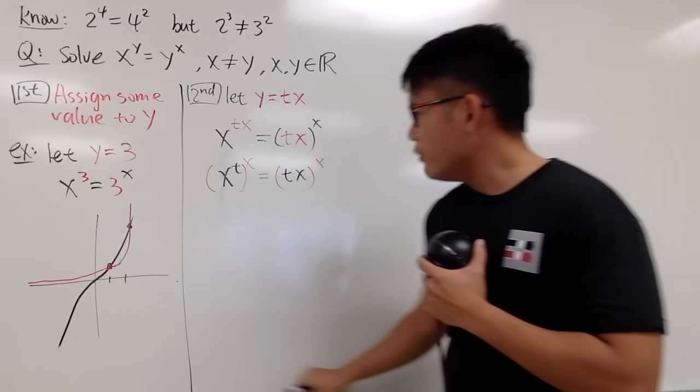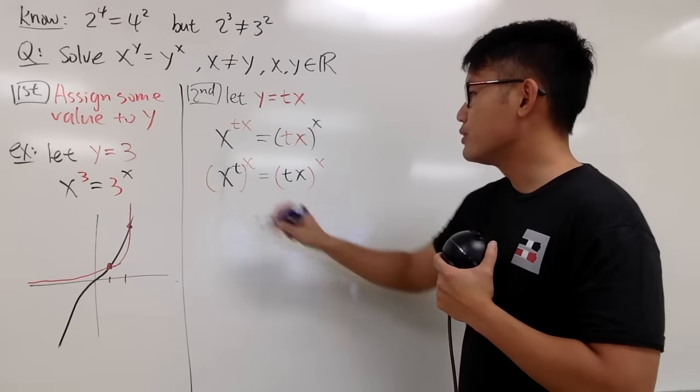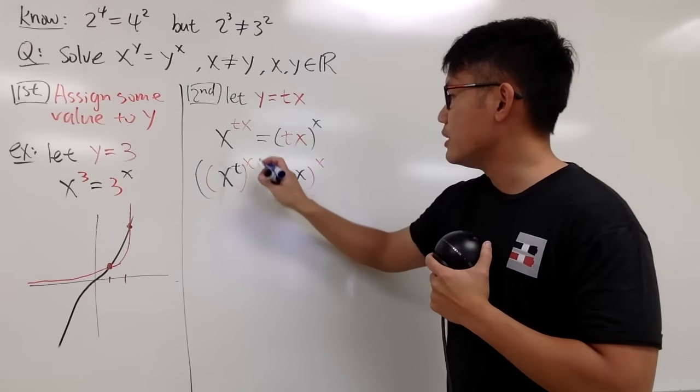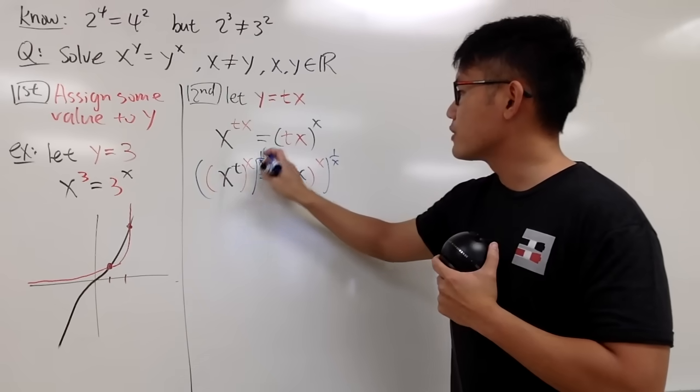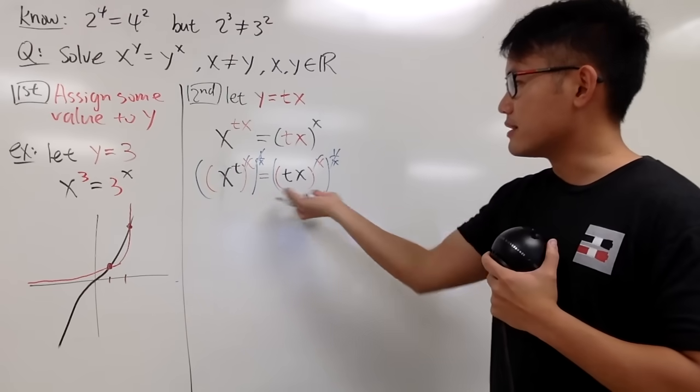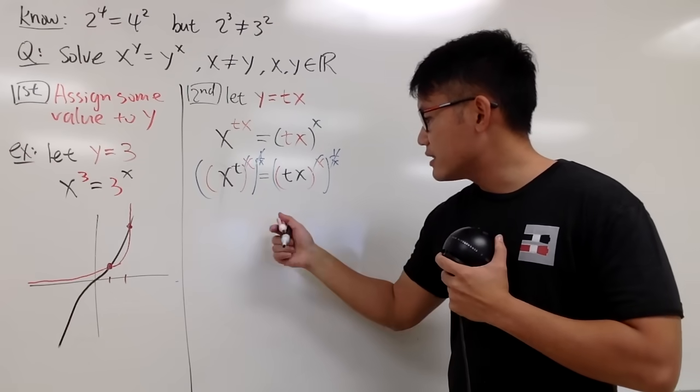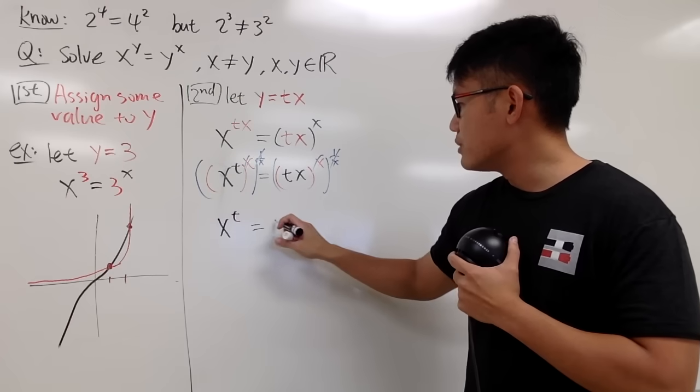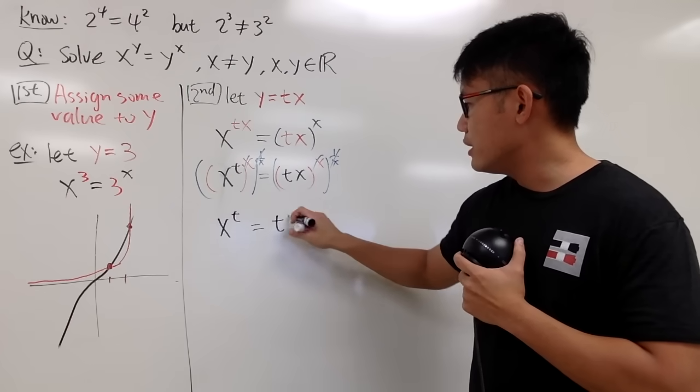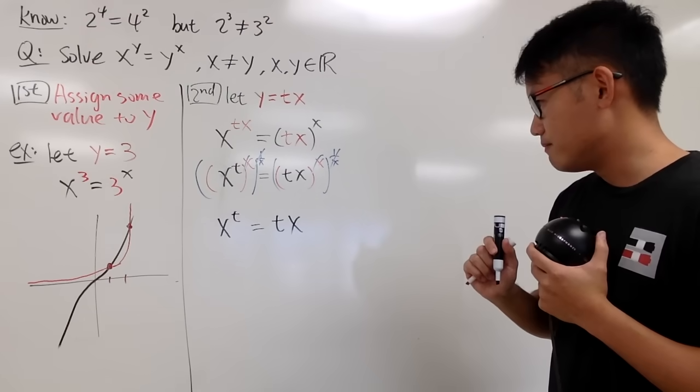And notice, both sides, they are raised to the x power now. So what you can do is, you can raise both sides to the 1 over x power, and we're just focusing on the bases, right here. And the left-hand side, it's going to be x to the t, and the right-hand side is just t times x.